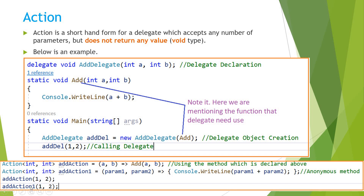Here, as this Action accepts two integer values, I am passing two integer values. These values will be passed to the Add method and the operation will be executed for the AddDel object. For AddActionOne, we are passing two values and it will execute the anonymous function and print the sum of one and two.